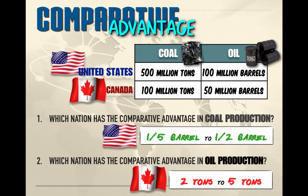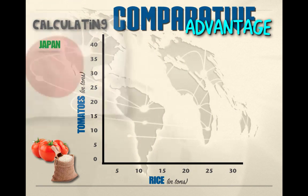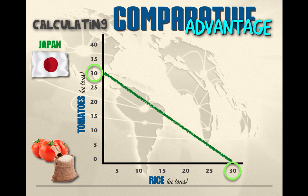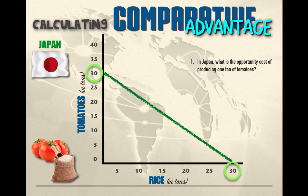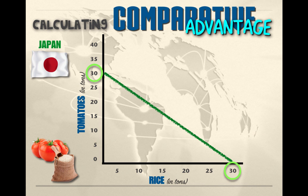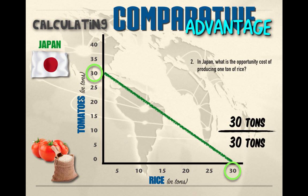In trade analysis, there are two different types of questions: output questions and input questions. Output questions use output units in the schedule. For example, a production possibilities curve for Japan shows constant opportunity cost — Japan can produce 30 tons of tomatoes and 30 tons of rice. The per-unit opportunity cost in Japan of producing one ton of tomatoes is one ton of rice, and the per-unit opportunity cost of producing one ton of rice is one ton of tomatoes.